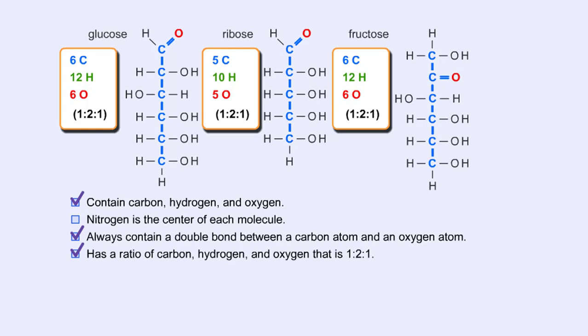Another fact about carbohydrates is that they can appear in two forms. They can be in the form of a straight chain, like the examples here, or they can take the form of a ring. Because this ring structure is so important, let's take a closer look.